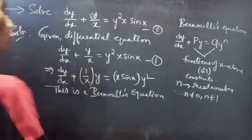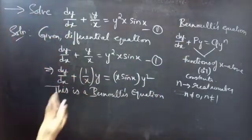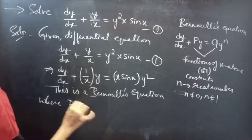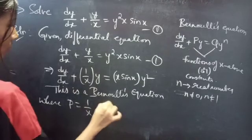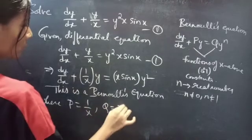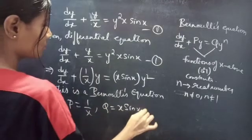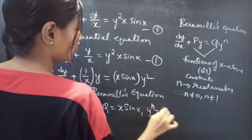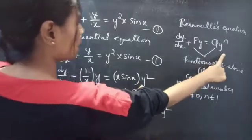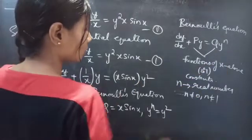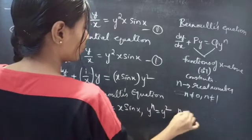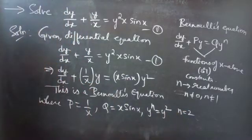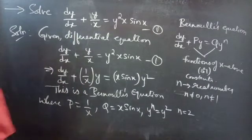By comparing the two equations, we will get P, Q, and n. P equals 1/x, Q equals x sin x, and y power n equals y², so by equating the powers we get n equals 2.